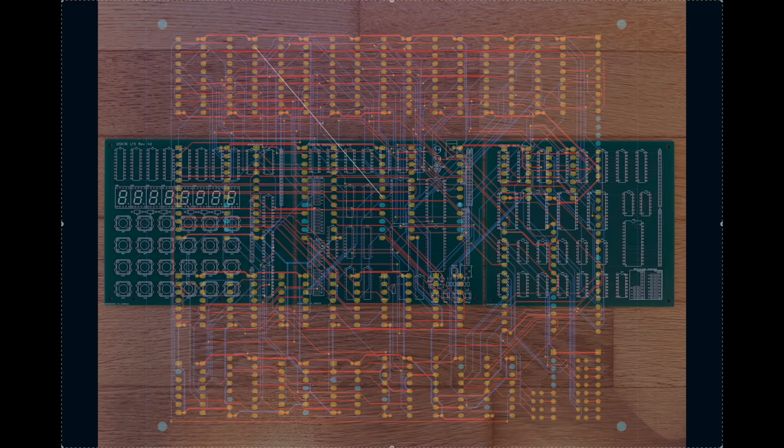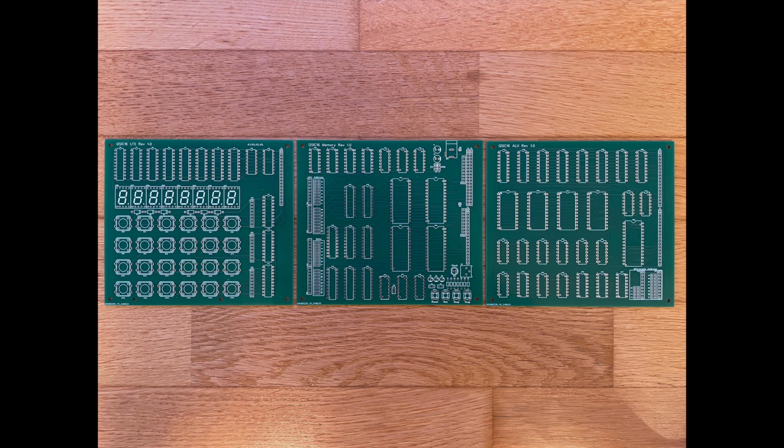Once the design was complete, I uploaded the files to the JLCPCB website. Less than two weeks later, I received three boards, ready for components to be soldered. In total, the parts cost around $125. The printed circuit boards cost $35 plus $30 for shipping. That's a total of $190 US dollars, probably more than you'd want to pay just to have a basic calculator, but it was a fun and educational project.